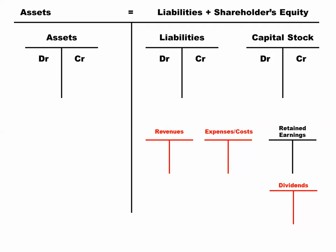Let's remind ourselves what some of the accounts are. Over in your assets, we've got cash, accounts receivable, supplies, and all sorts of equipment. Those are your main asset accounts.